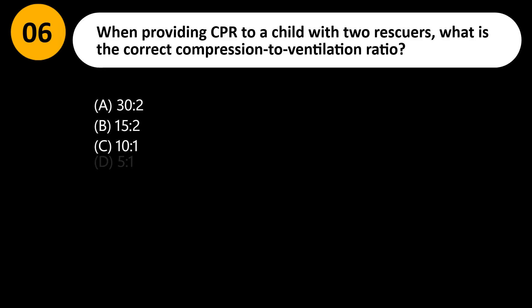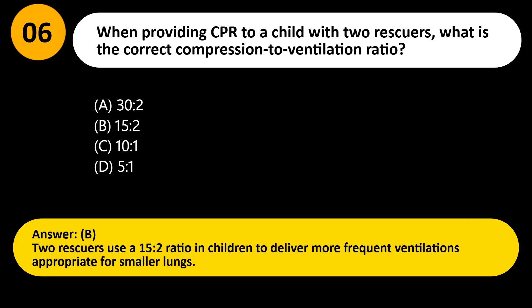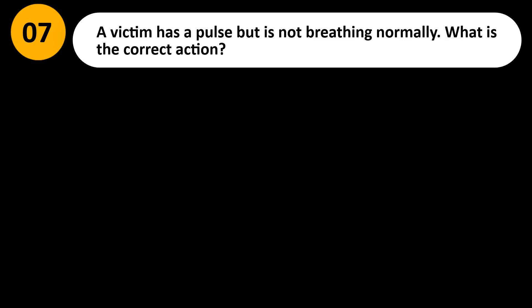When providing CPR to a child with two rescuers, what is the correct compression-to-ventilation ratio? A) 30:2, B) 15:2, C) 10:1, D) 5:1. Answer: B. Two rescuers use a 15:2 ratio in children to deliver more frequent ventilations appropriate for smaller lungs.